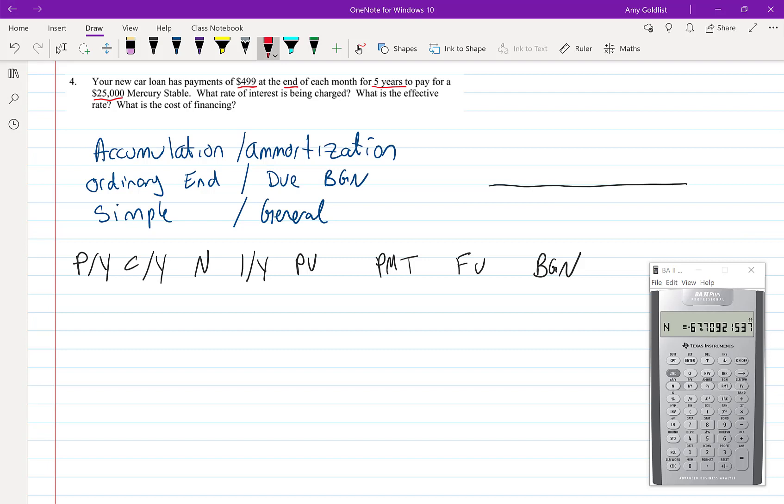So let's look through this one as well. We borrowed $25,000 and every month we're going to pay back $499. And that's going to go on for 60 months or five years.